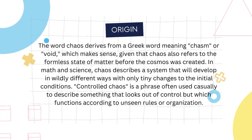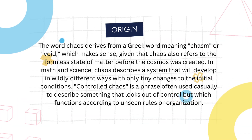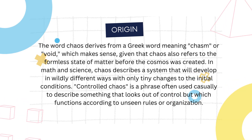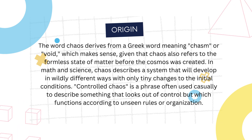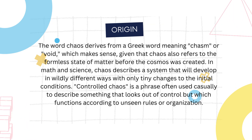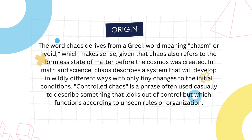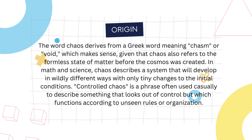Chaos — origin. The word chaos derives from a Greek word meaning chasm or void, which makes sense, given that chaos also refers to the formless state of matter before the cosmos was created. In math and science, chaos describes a system that will develop in wildly different ways with only tiny changes to the initial conditions. Controlled chaos is a phrase often used casually to describe something that looks out of control but which functions according to unseen rules or organization.